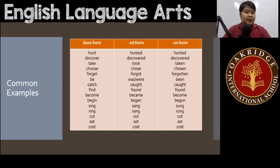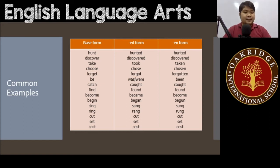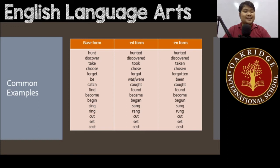'Become' is one of those verbs that returns to the original form in the en — 'become' becomes 'became' in the ed form and 'become' again in the en form. 'Begin' is different: it becomes 'began' in the ed form and 'begun' in the en form.